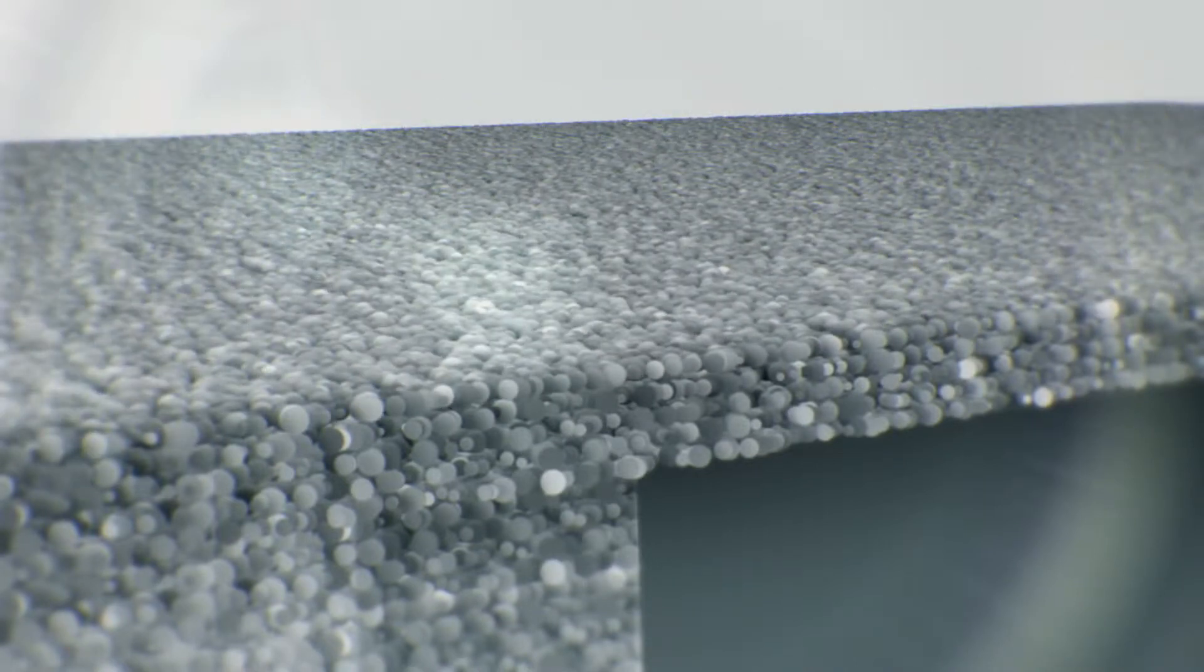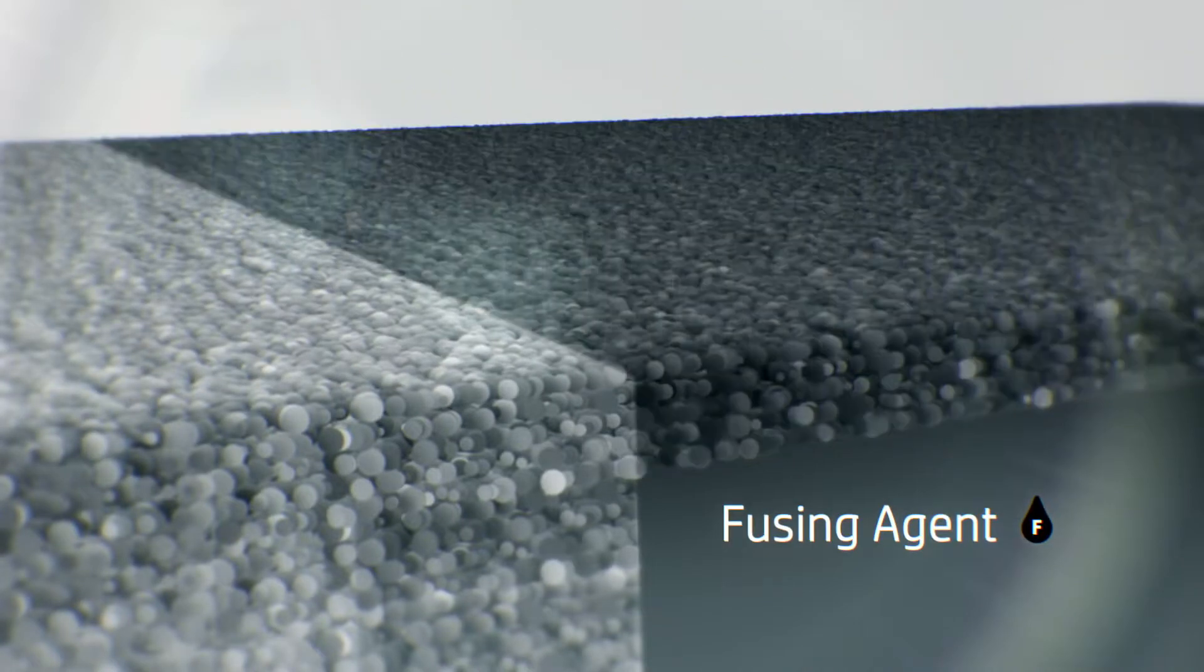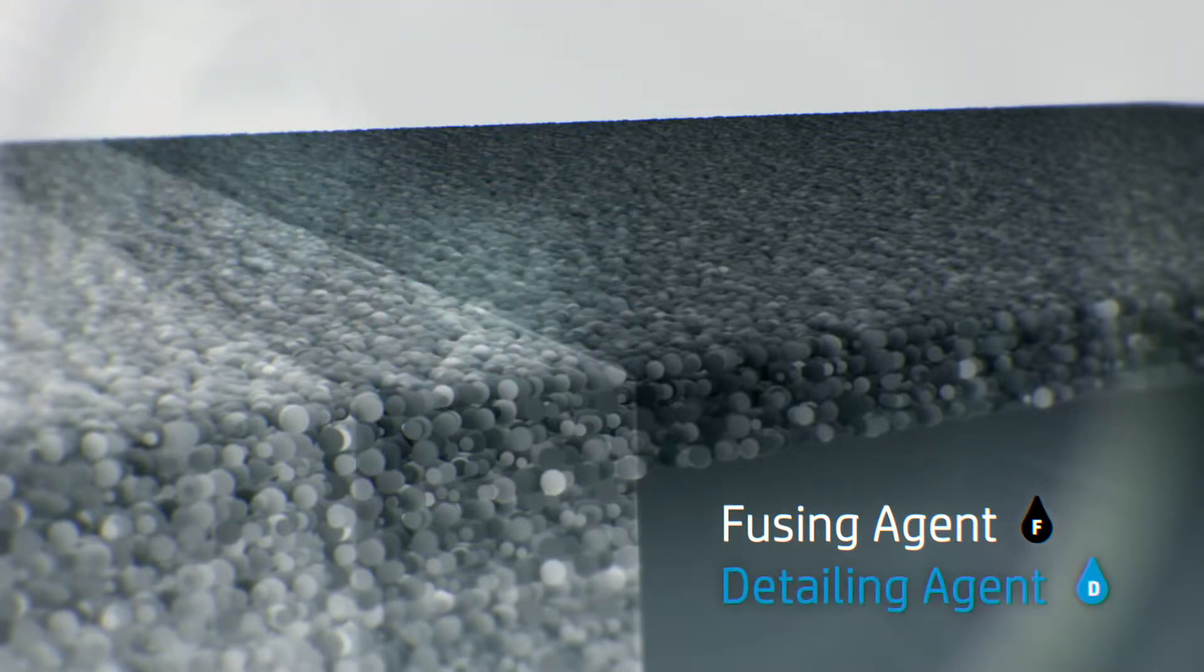In this process, a fusing agent is applied on a material layer where the particles are meant to fuse together. A detailing agent is applied to modify fusing and create fine detail and smooth surfaces.